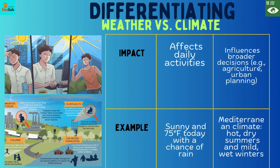Impact: Weather affects our daily activities, while climate influences broader decisions such as agriculture and urban planning. Example: An example of weather is 'Sunny and 75°F today with a chance of rain,' while a climate example is a Mediterranean climate with hot, dry summers and mild, wet winters.